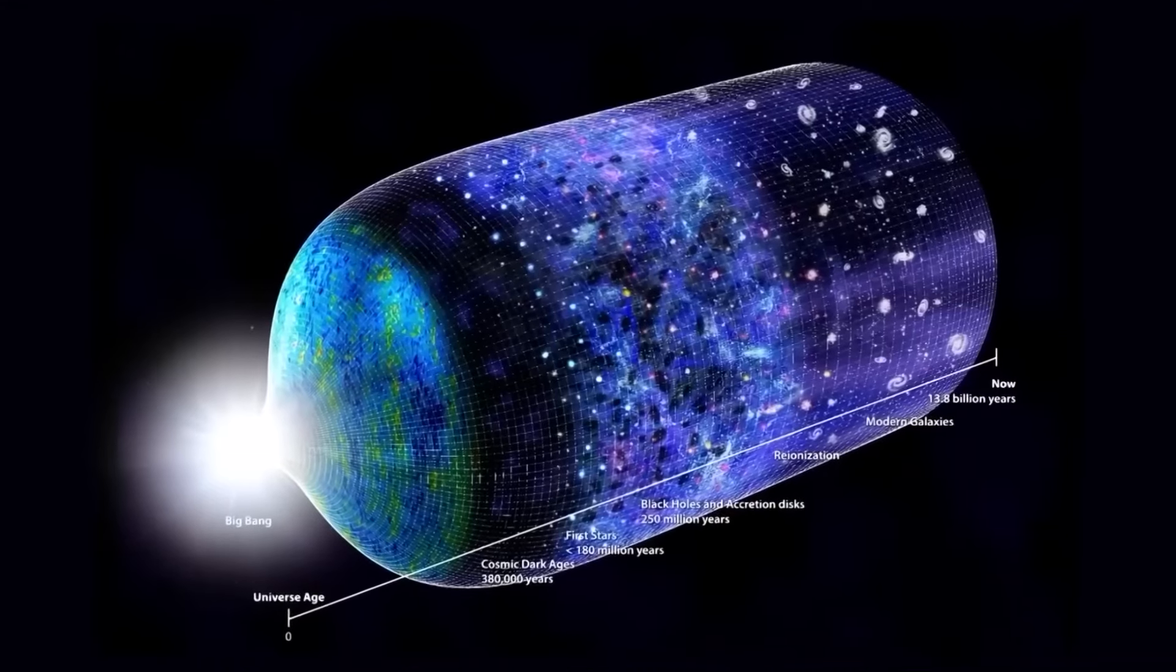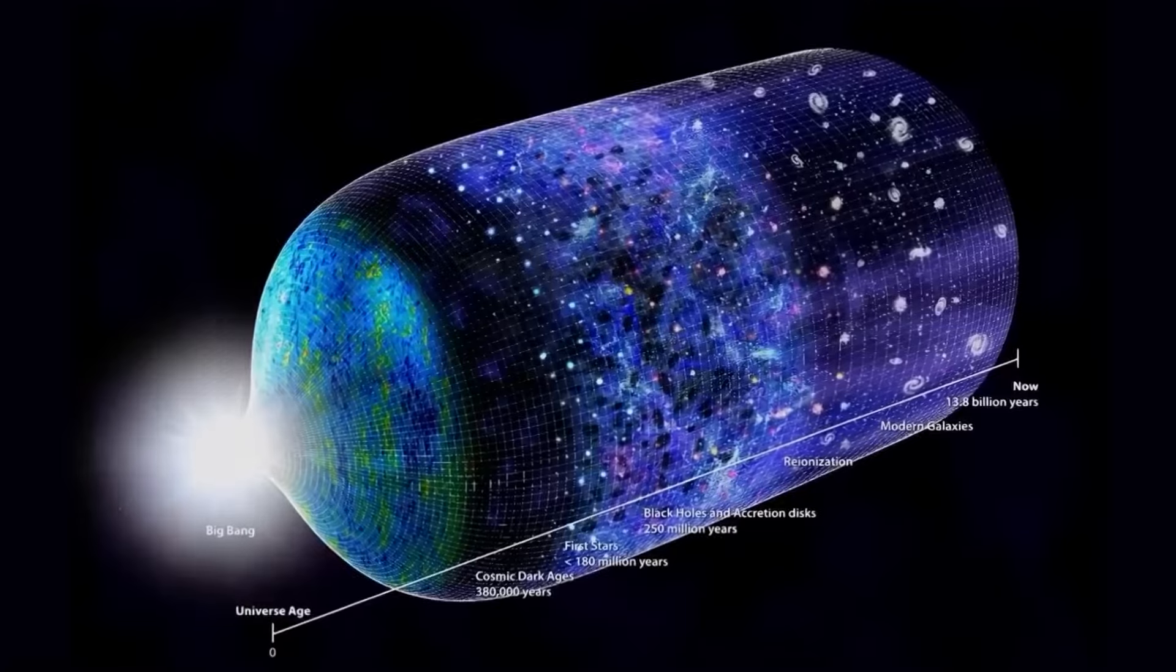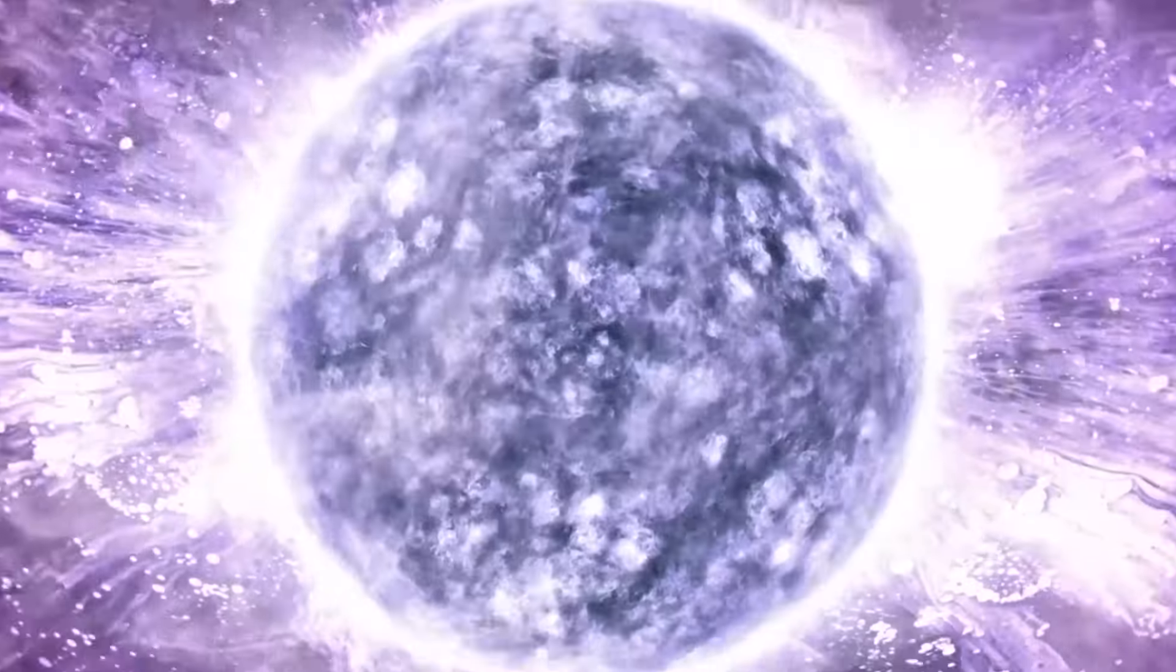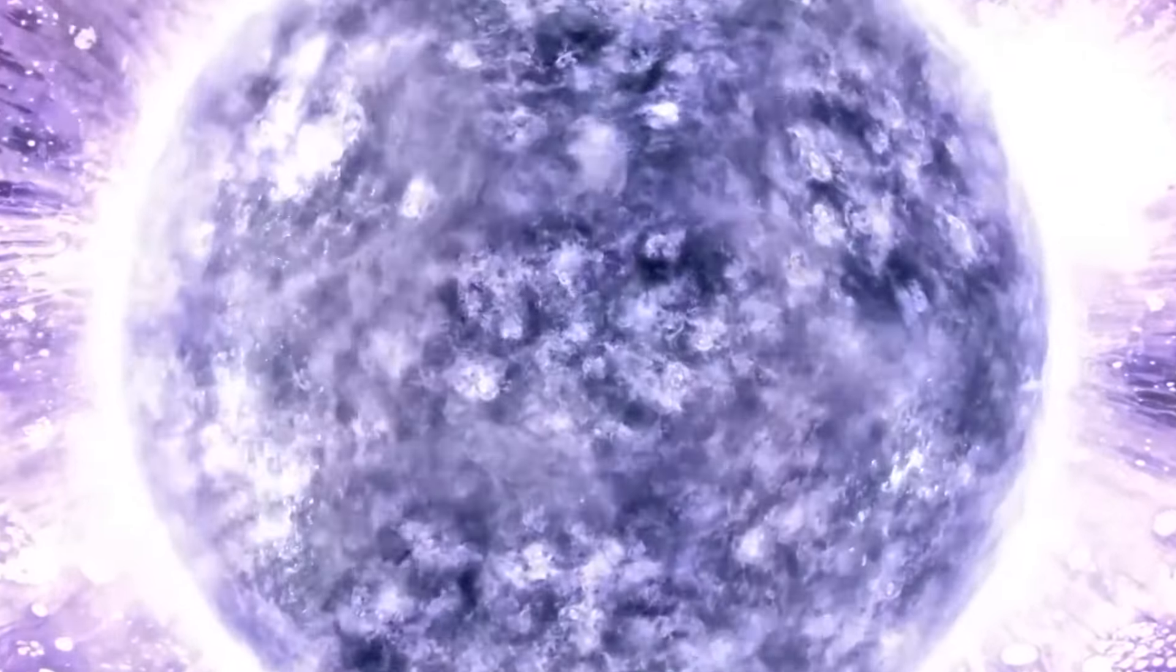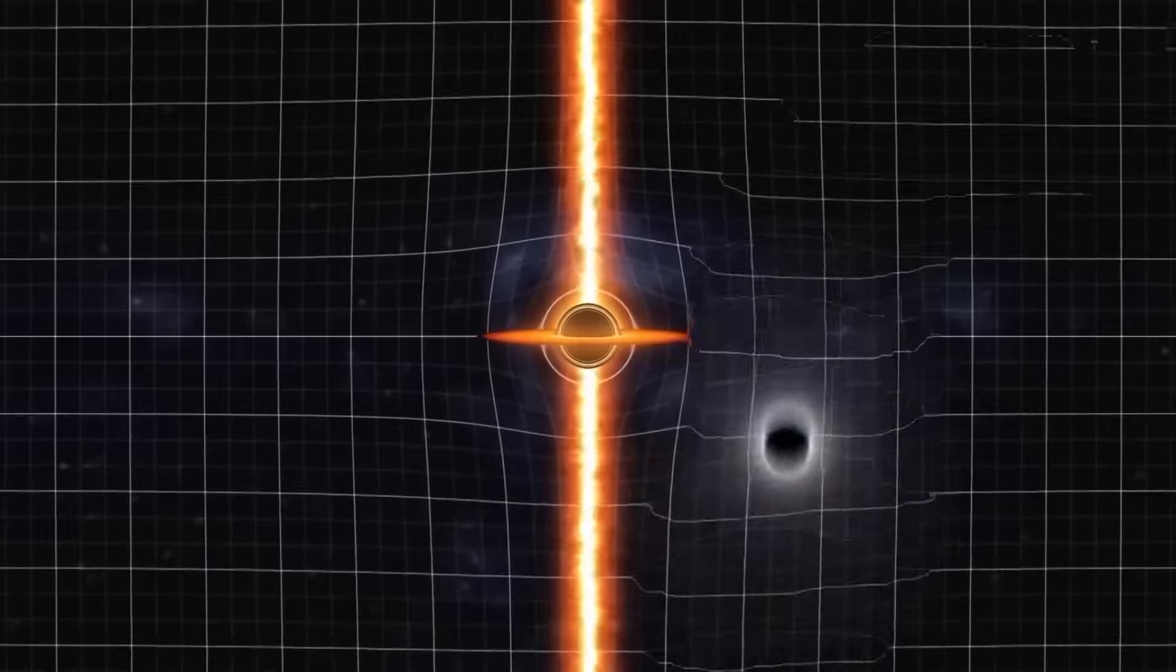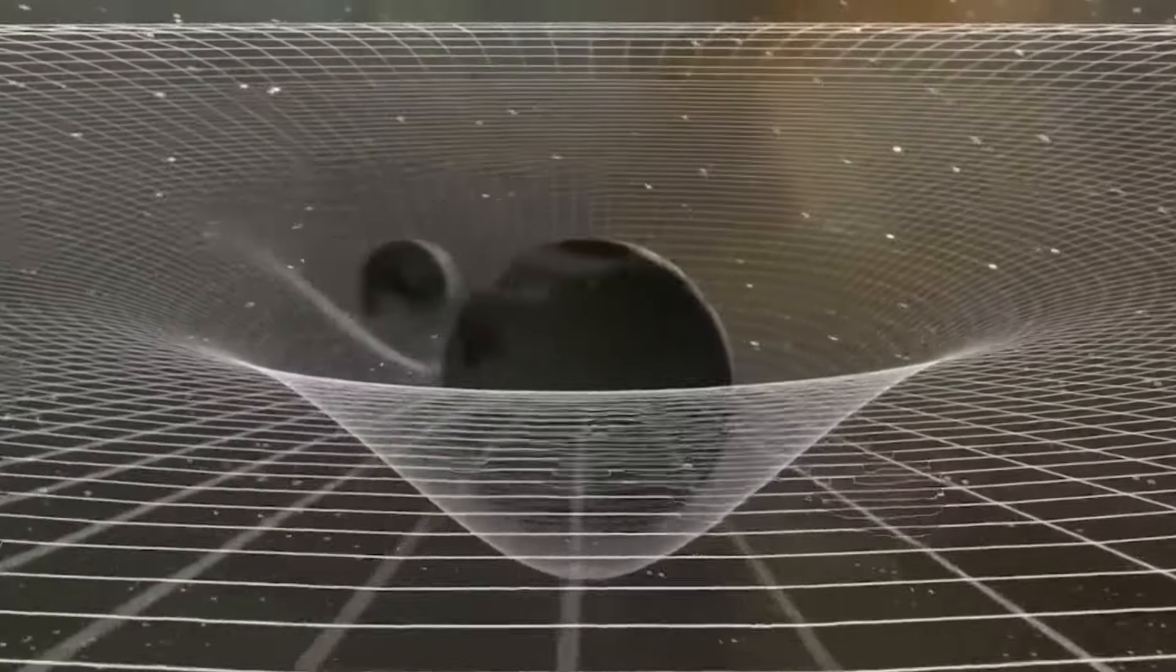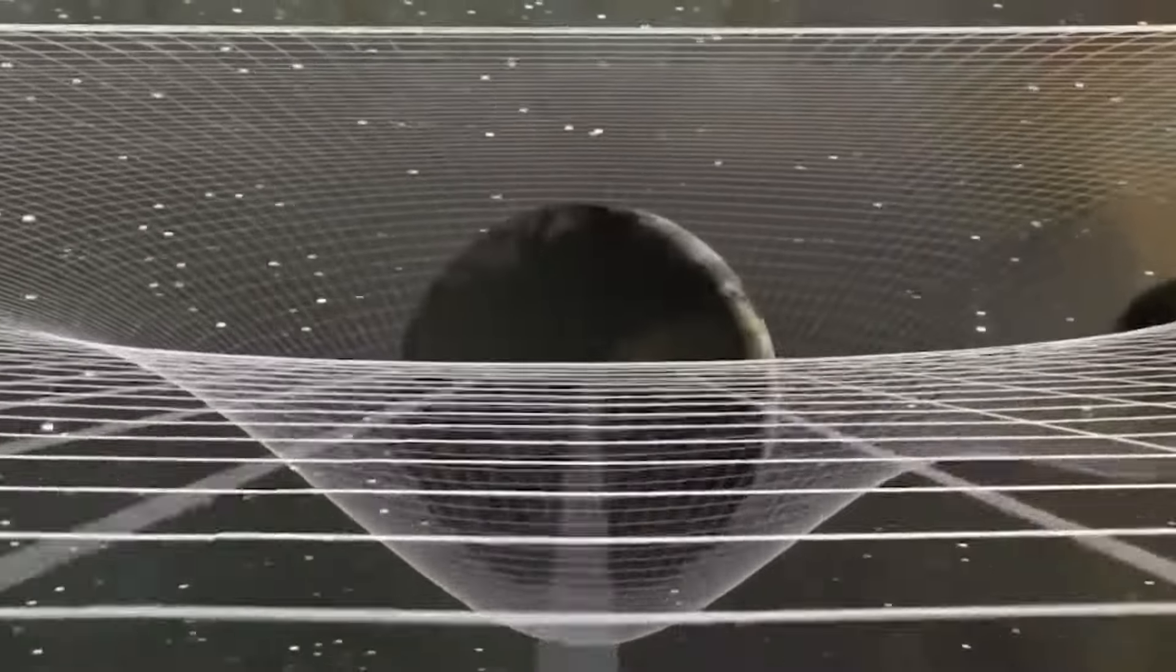Objects with mass warp spacetime, creating a gravitational field that affects the motion of other objects. To visualize this, we can imagine a sheet of paper representing spacetime. If we place two points onto the paper and draw a line between them, we are representing how objects move through spacetime.